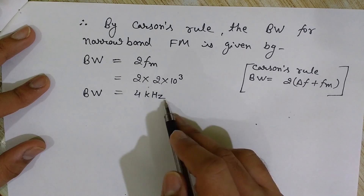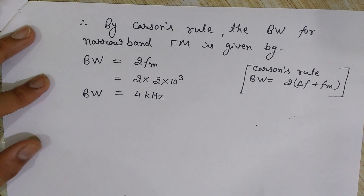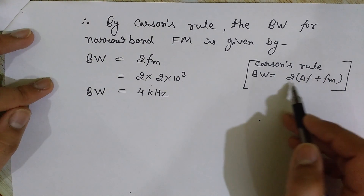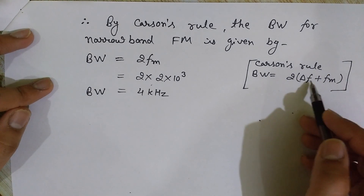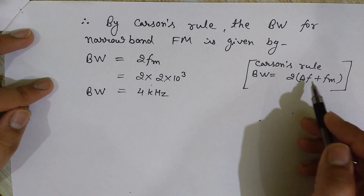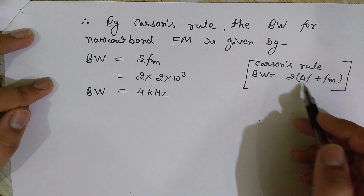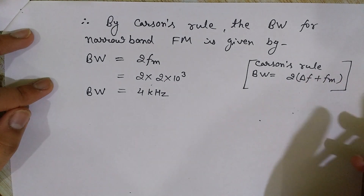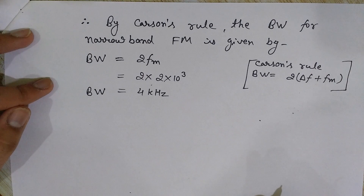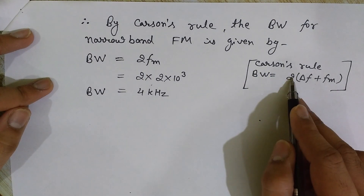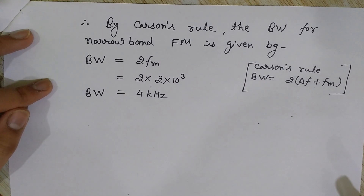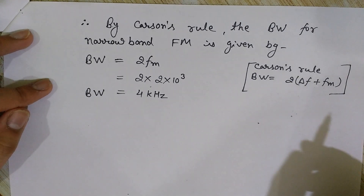So 2 times FM: FM is 2 kilohertz, so 2 into 2×10³ gives us 4 kilohertz. Although it was a seemingly simple problem, you may have the tendency to rush directly to the formula since both FM and delta F are given — delta F is given to confuse you. You must first find the modulation index MF and check whether it is less than or greater than pi by 2, then apply Carson's rule accordingly.